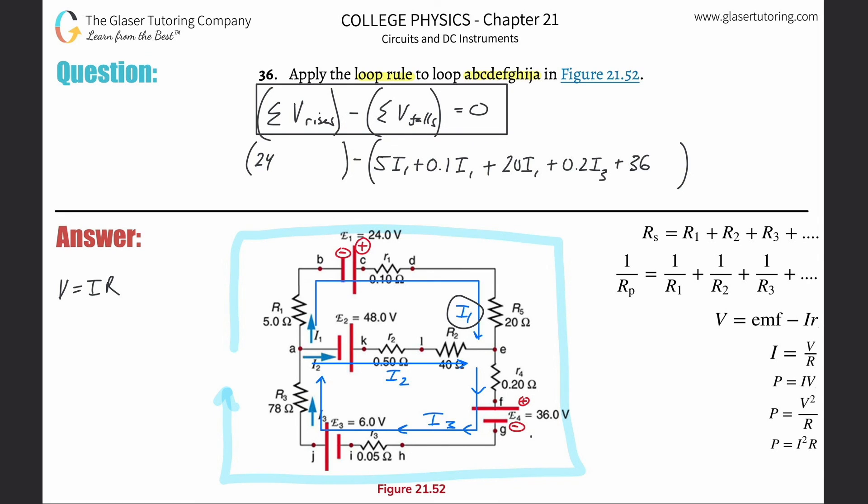We come around and get to another resistance. We're still traveling with the current, so that's a potential fall: 0.05 times I3. Then we come to a battery. I'm going from negative to positive - that's a potential rise of 6 volts, so I add that to this category.